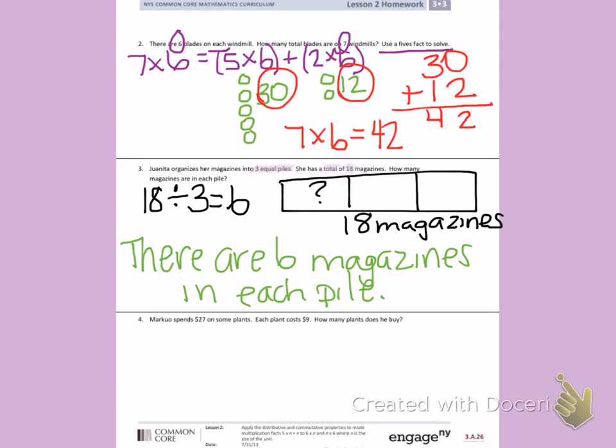Number four: Marco spends twenty-seven dollars on some plants. Each plant costs nine dollars. How many plants does he buy? Some important information: he spends twenty-seven dollars. Each plant costs nine dollars. I need to figure out how many plants he bought. That gives me a clue that twenty-seven dollars is the total amount he spent, and each plant costs nine dollars. That gives me my size. So again, I'm doing a division problem.